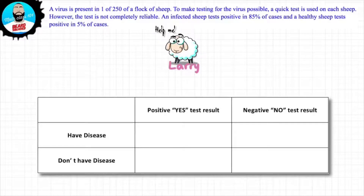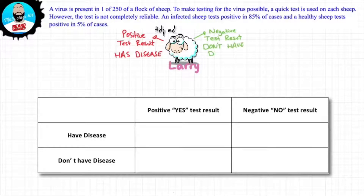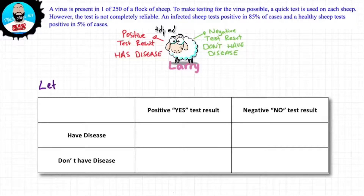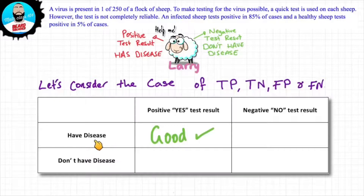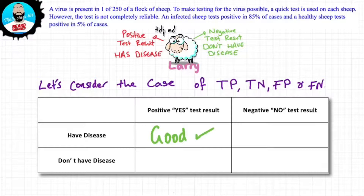Now the vet, after doing the test, can either give a positive result, in which case Larry the sheep does have the disease, or get a negative test result, in which case Larry thankfully doesn't have the disease. However, these tests aren't completely reliable — there's always a margin of error, in which case there are four possible outcomes. So if Larry the sheep does actually have the disease and gets a positive test result, that's good, because we can now address that situation, give him the right medication so he can get rid of the lymphadenitis and have a healthy life.